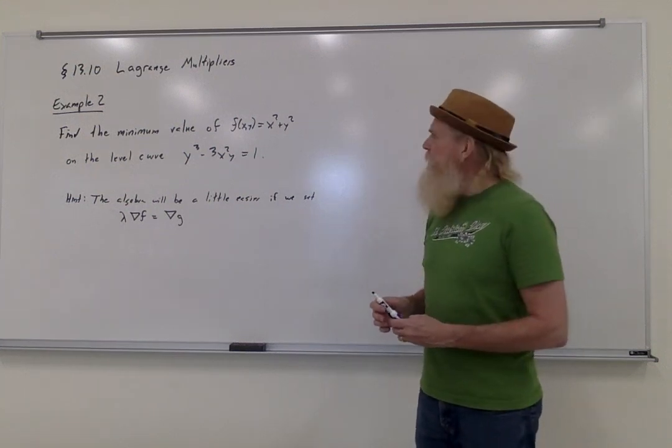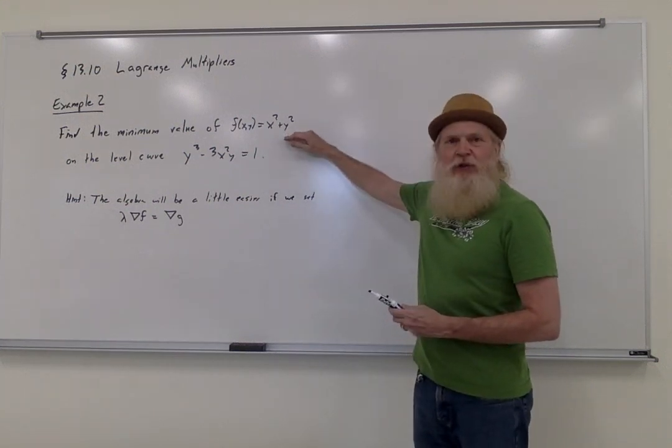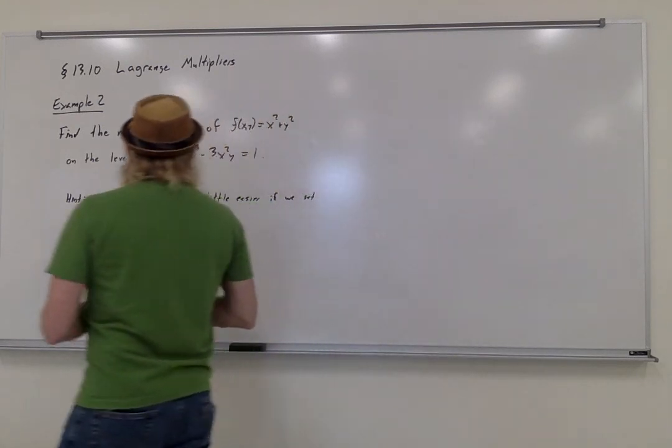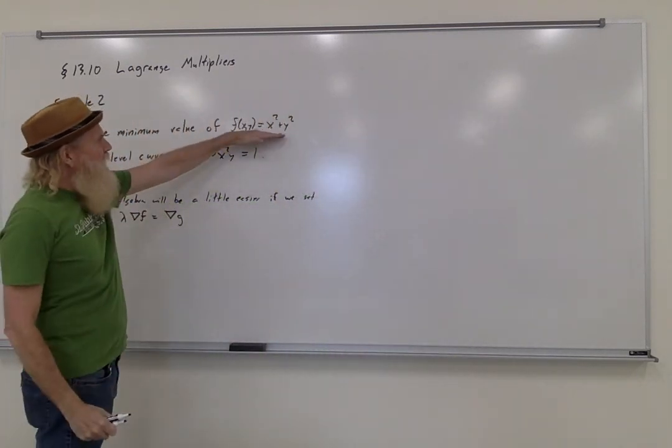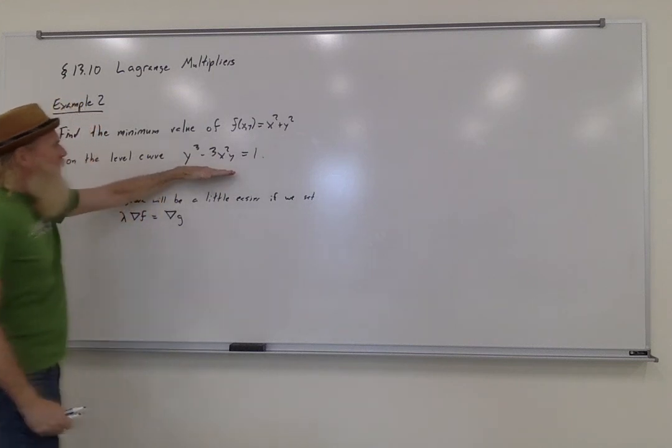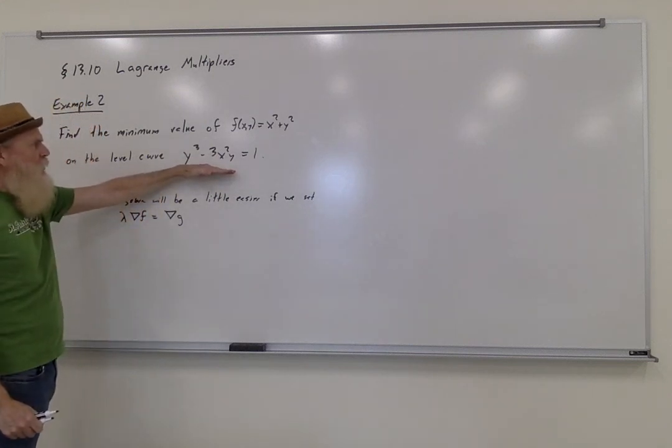For a second example of Lagrange multipliers, let's look at this function of two variables. Let's find the minimum value of the function x squared plus y squared on the level curve y cubed minus 3x squared y equals 1.